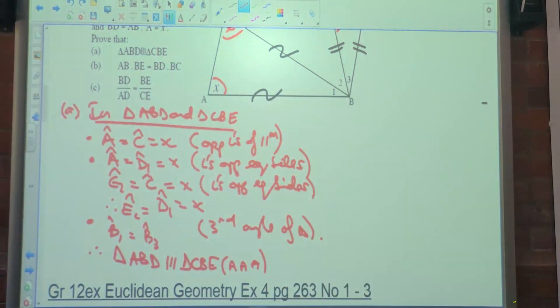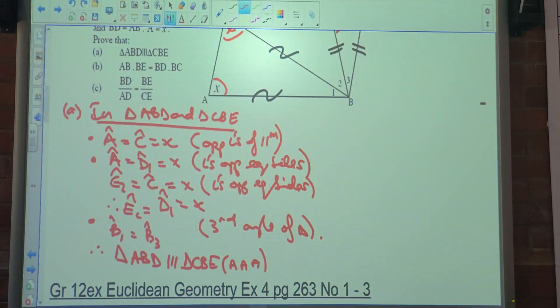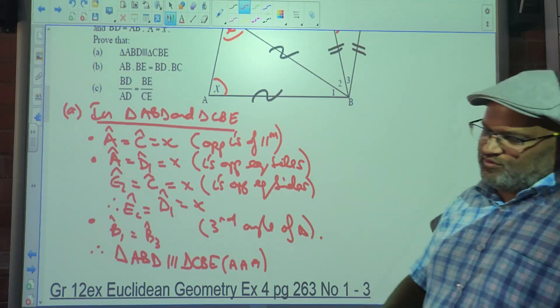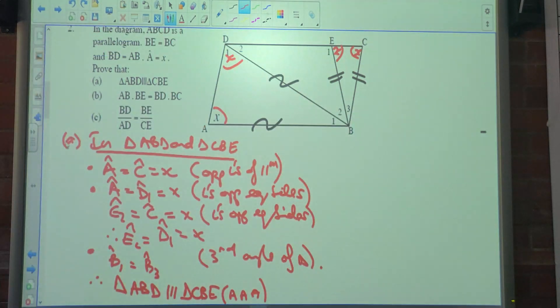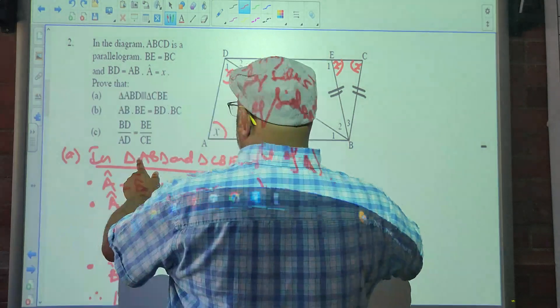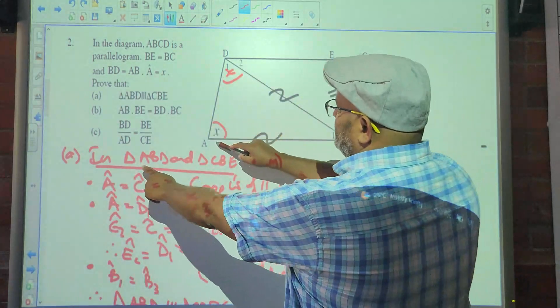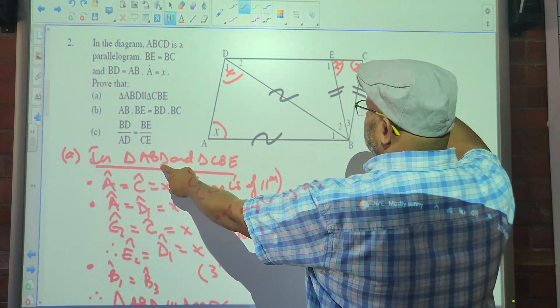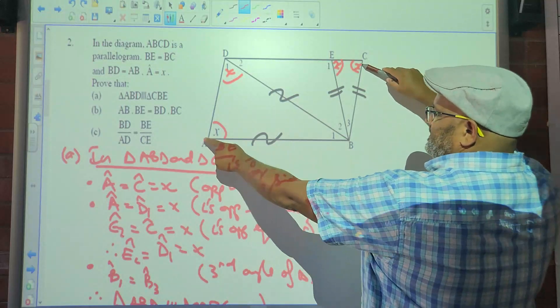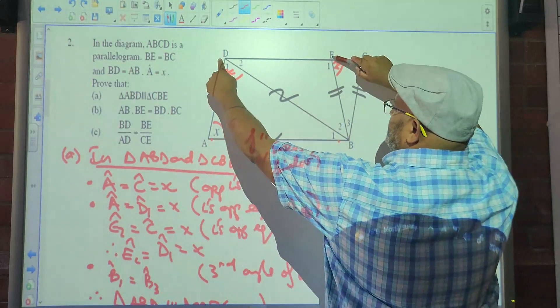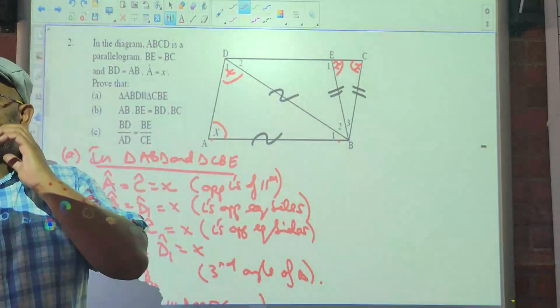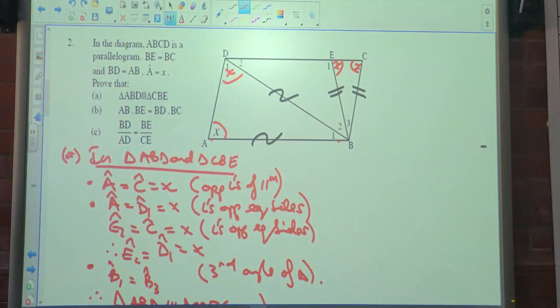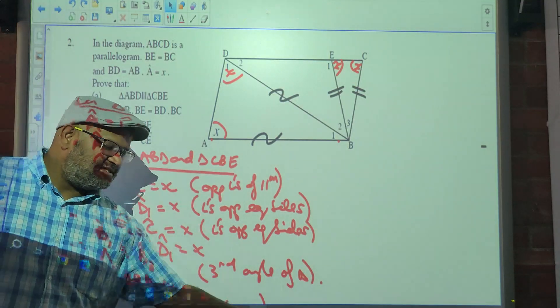Now we can conclude. Therefore, E2 is equal to angle D1. There's a second link now. Remember, I can't just leave it in the air, I must link it. And then what? There's a third angle? Angle D1 is equal to angle D. Why? Third angle. Is that enough to conclude similarity? Yes. So what do we say? Therefore triangle ABD is similar to triangle CBE. Why? Angle, angle, angle. And of course you can see, you can follow the letters and see if it's in the right order as well.